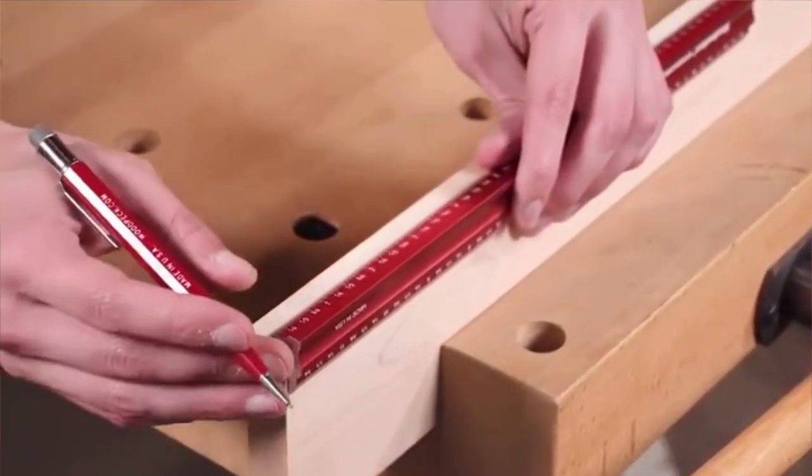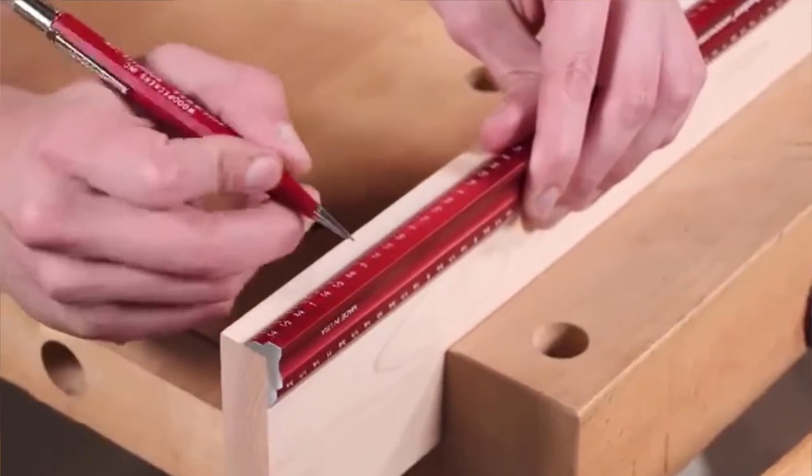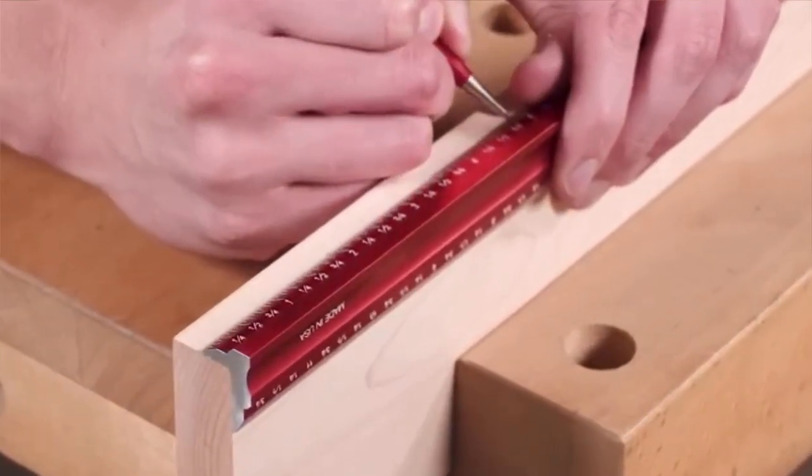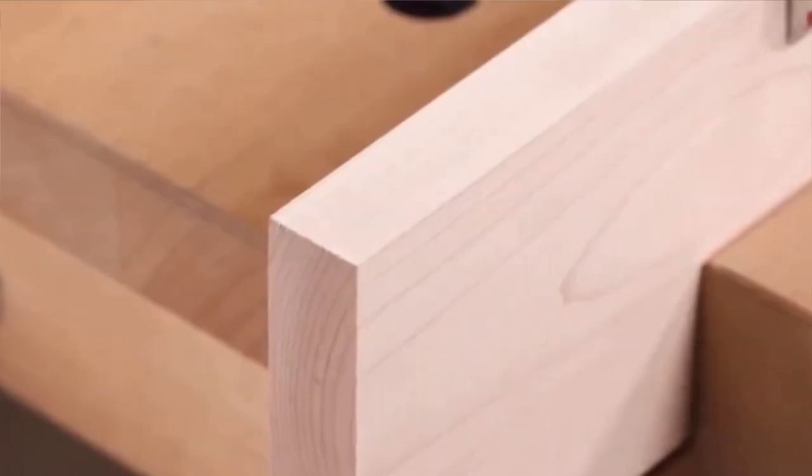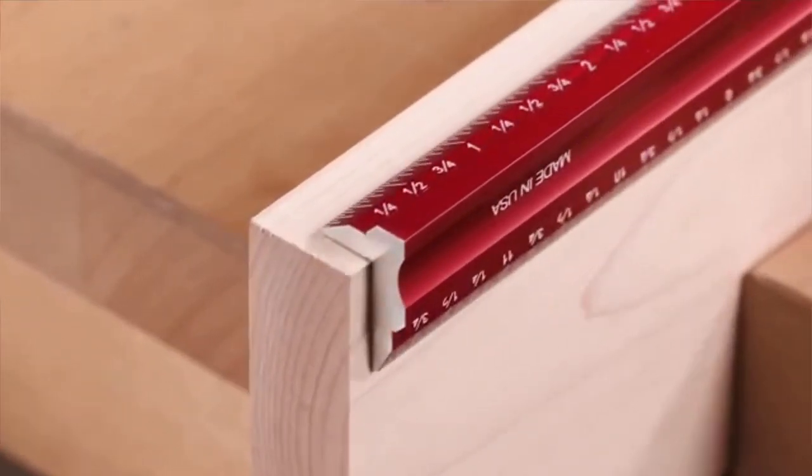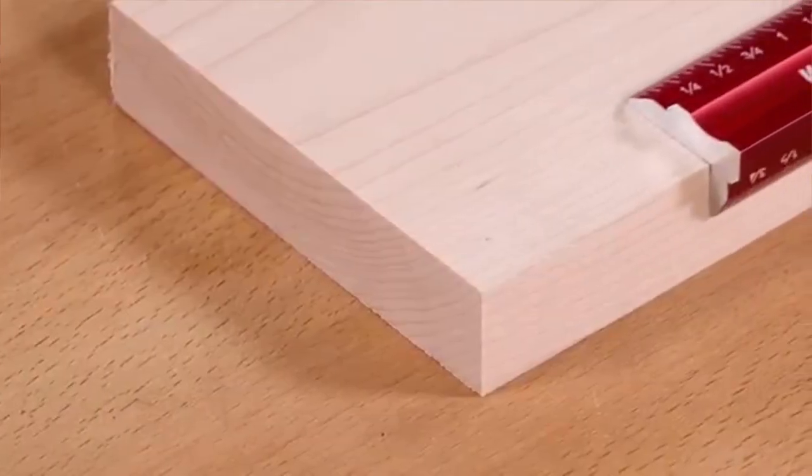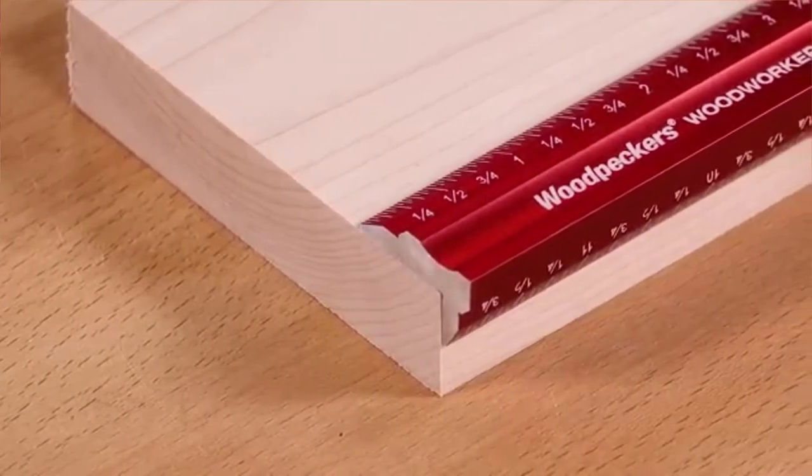Woodpecker's new woodworker's edge rule eliminates these issues by wrapping around the edge of your stock with an accurate scale on both sides. The short side of the tool is just three-eighths of an inch wide, leaving room to mark stock as thin as seven-sixteenths, while the long side reaches three-quarters of an inch across the face of your piece.